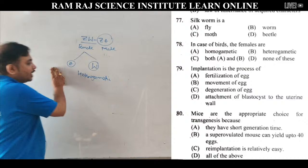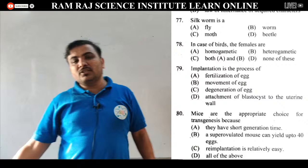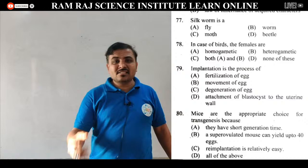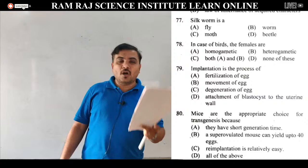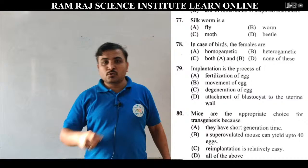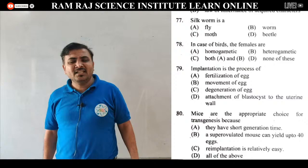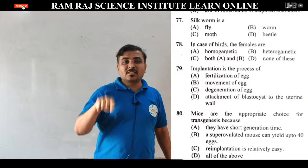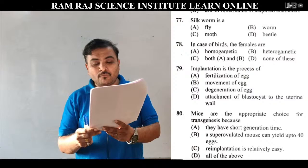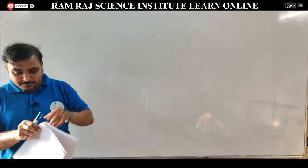Question 80: mice are the appropriate choice for transgenic animals. More than 80% transgenic animals are mice. कारण है: they have a short generation time. Super-ovulated mouse can yield up to 40 eggs. Re-implantation is relatively easy. ये सारे reasons हैं जिनकी वज़ह से mice सबसे appropriate choice है. Correct answer is option D — all of the above.